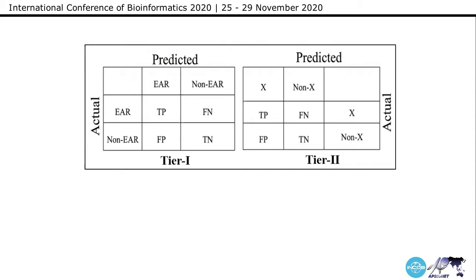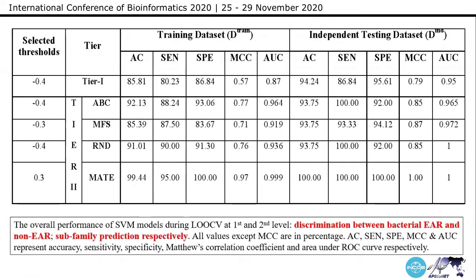This is the overall schema to classify predictions into different categories — an example of predicted versus actual, for both Tier 1 and Tier 2. This is the benchmarking result of training and testing. The first column shows the selected threshold where I found the maximum accuracy of the designed models. In Tier 1, we found 85% accuracy on the training dataset, while on the independent dataset we found 94% accuracy. In Tier 2, we found high accuracy in all cases — above 90% — while on the independent dataset we found above 93% accuracy, and in some cases 100% accuracy. This concludes that our designed model has significant prediction capability.